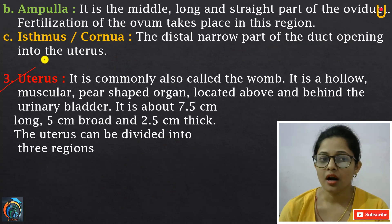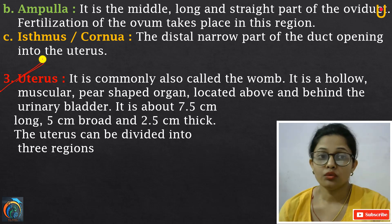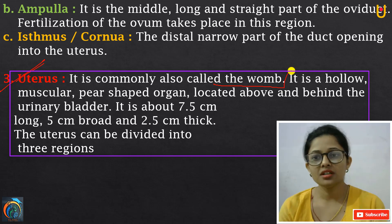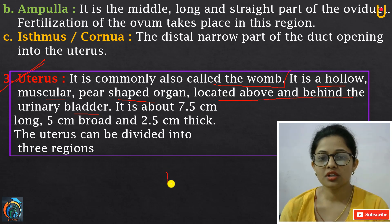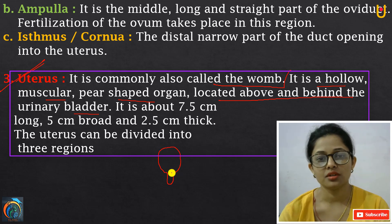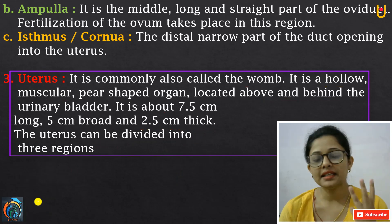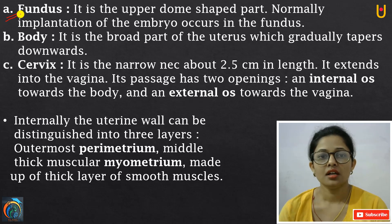Now the third reproductive organ is the uterus, also commonly called the womb — where the baby grows. It is hollow, muscular, and pear-shaped. Located above and behind the urinary bladder. It is about 7.5 cm long, 5 cm broad, and 2.5 cm thick. The uterus can be divided into three regions.